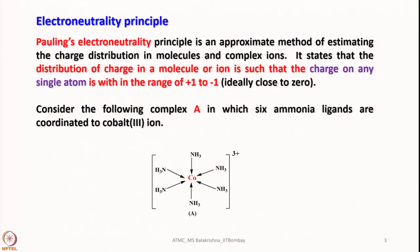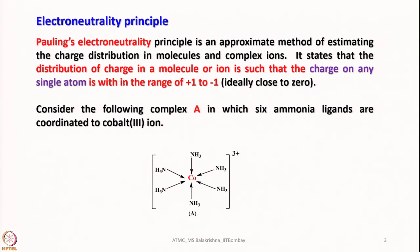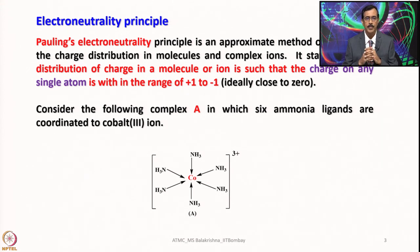Pauling's electron neutrality principle is an approximate method of estimating charge distribution in molecules and complex ions. It states that the distribution of charge in a molecule or ion is such that the charge on any single atom is within the range of +1 to −1, ideally close to 0. So in a metal complex, all species involved should have a charge between +1 and −1, ideally close to 0. This is the definition of the electron neutrality principle.